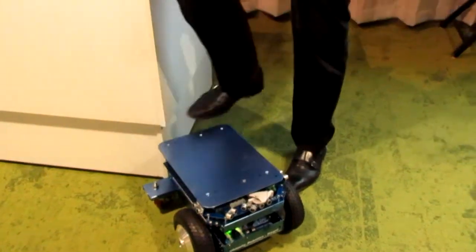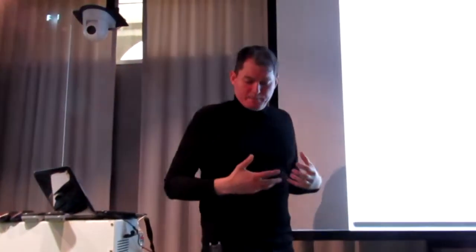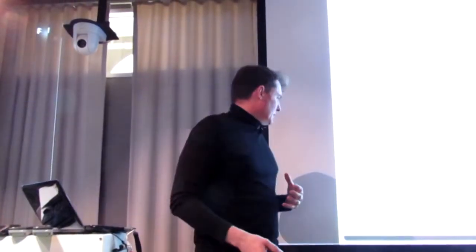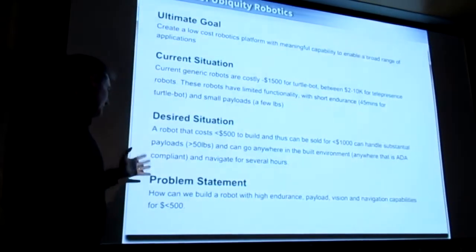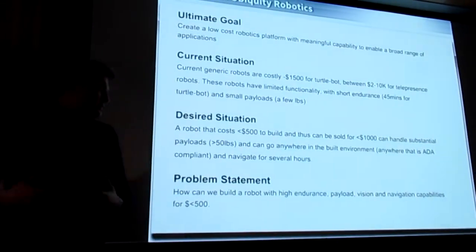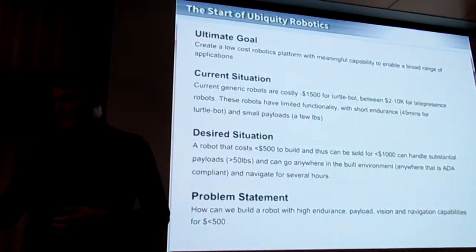And I think all of you have seen me do this before. You can stand on the robot and it drives around and so forth. Even people even had the courage to drive around on this thing before. So that was the problem statement. How can we build a robot with high endurance payload vision and navigation capabilities for less than $500?